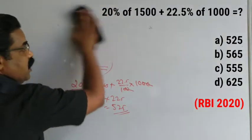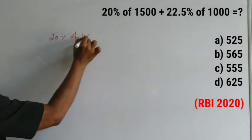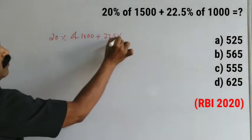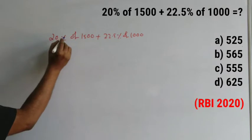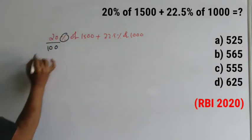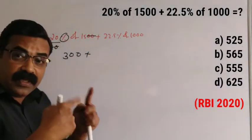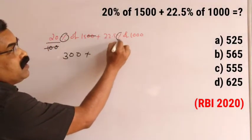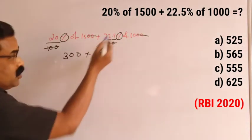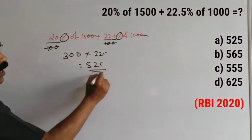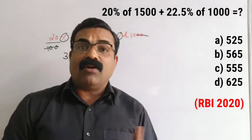One more method for the same question: 20% of 1500 plus 22.5% of 1000. The percentage symbol means divided by 100. So cut one zero from 100 and one zero from 1500 — 20 into 15 directly gives 300. Now 22.5% of 1000: cut the 100 and one zero from 1000, leaving 22.5 × 10 = 225. Directly write the answer 525 and mark the correct option from the given choices.